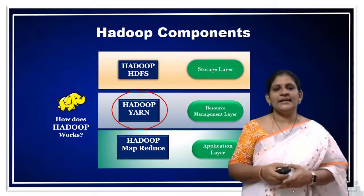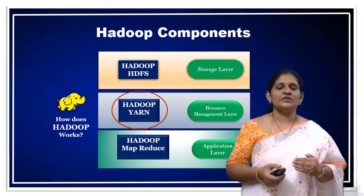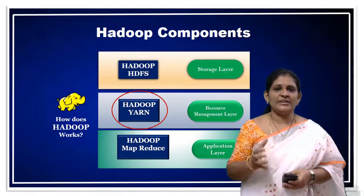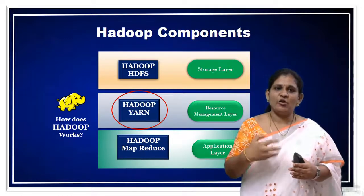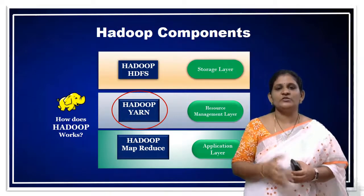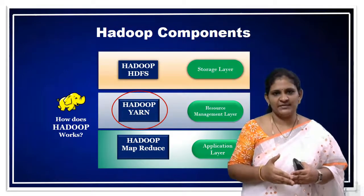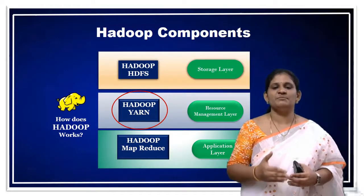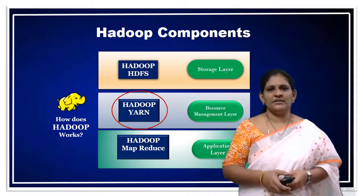The third component is YARN — Yet Another Resource Negotiator. YARN is a resource manager component; it manages all the resources present in a cluster. We will be forming a cluster, and in that cluster all the resources will be managed by the YARN component. So these are the three different components of Hadoop: HDFS stands for Hadoop Distributed File System, YARN stands for Yet Another Resource Negotiator, and MapReduce is a programming model built on top of Java.